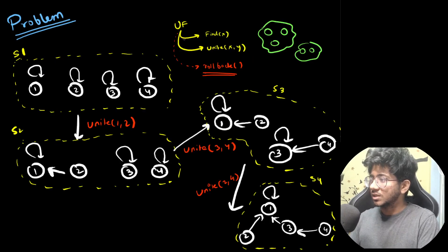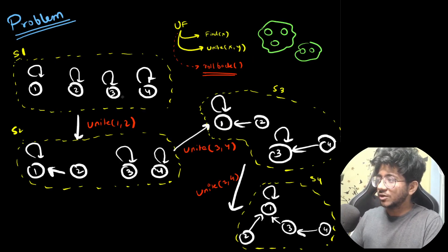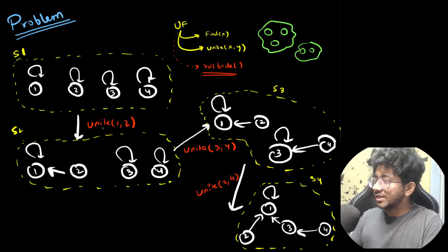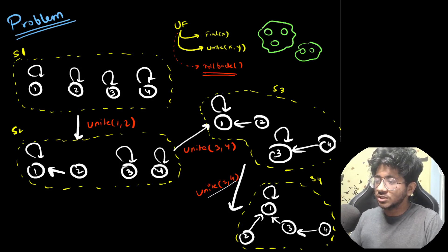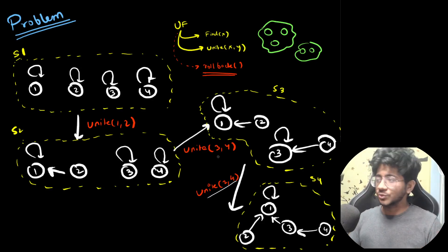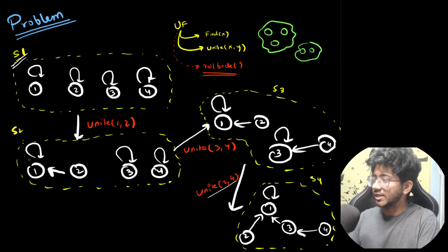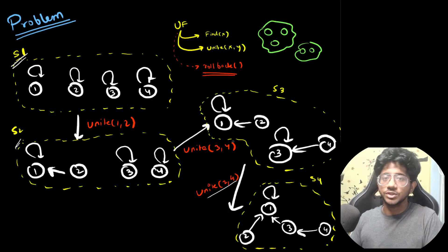Let's say we have a set of elements: one, two, three, four. We unite one and two — a link gets formed. Then we unite three and four — another link forms. Then we unite two and four: two's leader is one, four's leader is three, so three gets merged into one. This is how the union find looks after these operations. We can think of this as states: state one, state two, state three, state four that the process goes through.